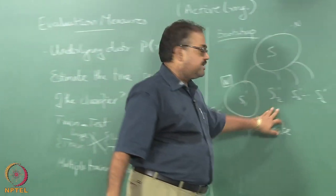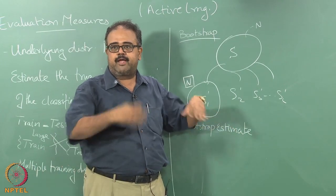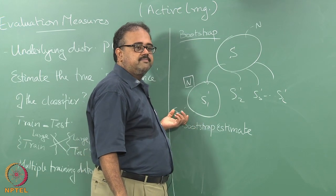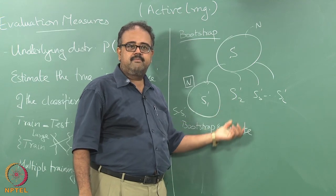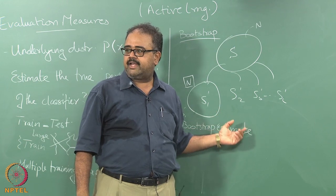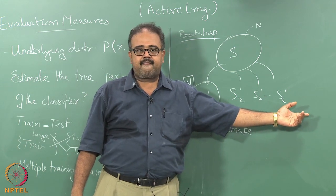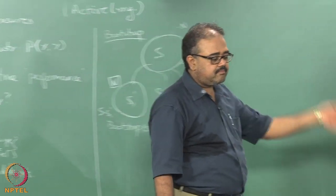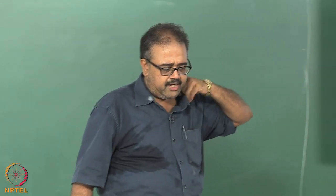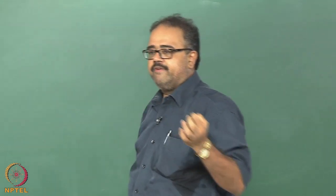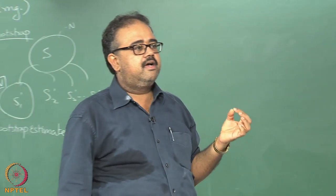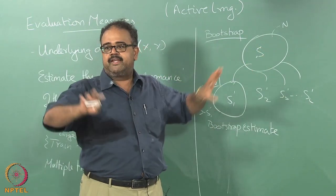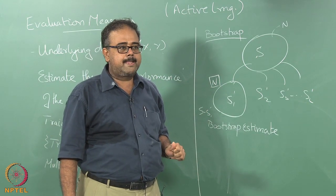Likewise I will train another classifier on S2 prime using the same method — if I am using backprop for training, I will use backprop and train on S1 prime and test on S minus S1 prime. I will get L estimates for the error, take an average, and that gives me the bootstrap estimate for the error. You can show that the bootstrap estimate will have lower variance than just randomly splitting S into test and train.